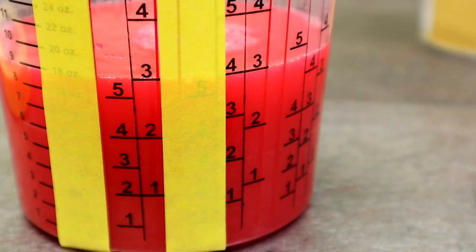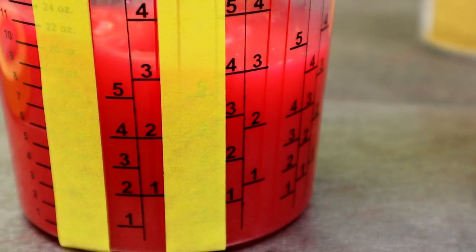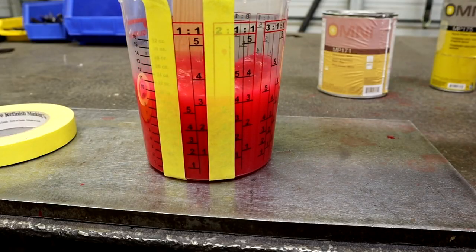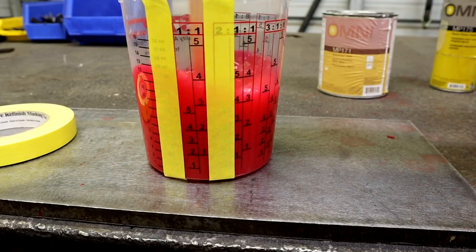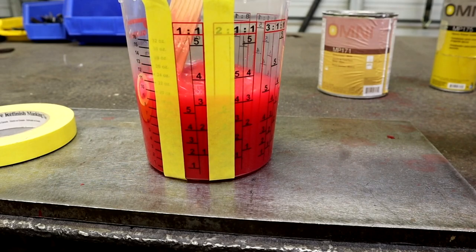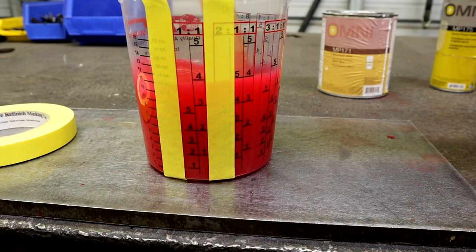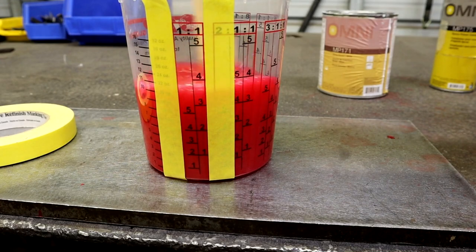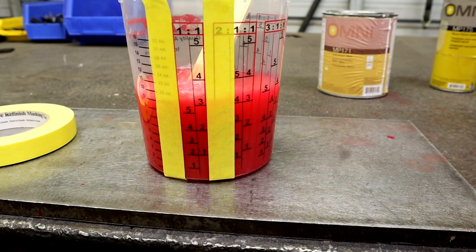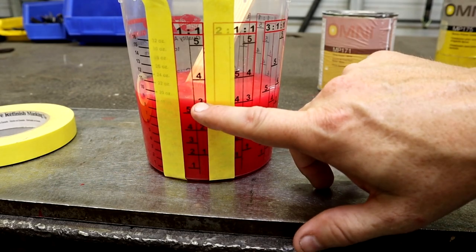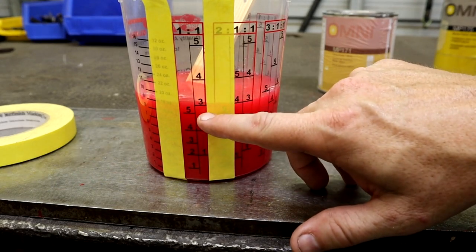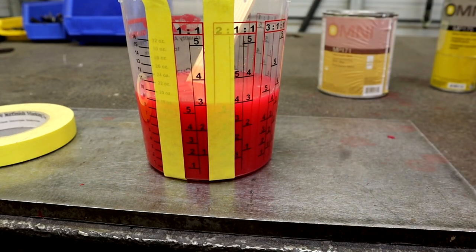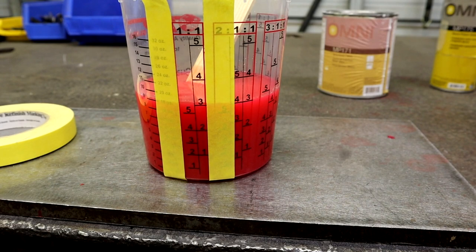And then just make sure you stir it up really good. A lot of people skimp on this. I like to spend a minute or two stirring this just to make sure everything's incorporated real good. And then make sure you always use a paint strainer. I'll link some of those in the description below when you pour it into your gun. So this will be your base coat. This is your one to one. It comes up, so it's roughly almost two and a half, really half of this. But we did the three, so there's your half quart mixture.